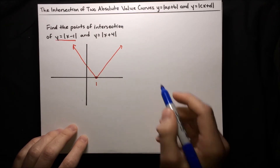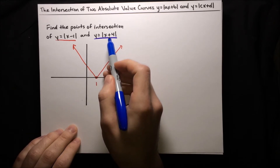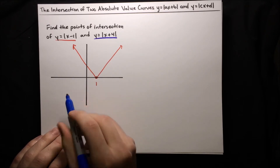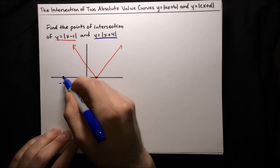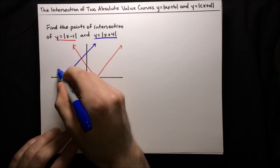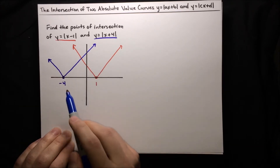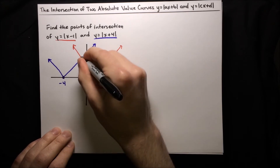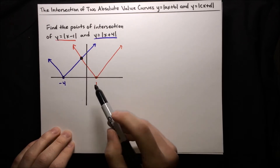Now the other absolute value function is the same idea, except we're shifting to the left this time — shifting to the left four units. So we're going to end up starting at negative 4, and it'll be that same v shape. So we've got our curves plotted, and we can see right here there's a point of intersection.